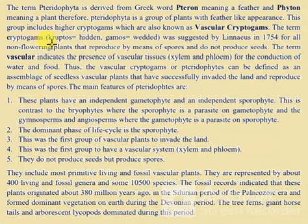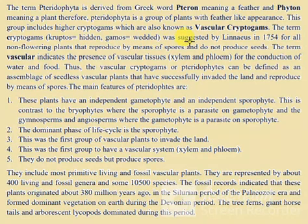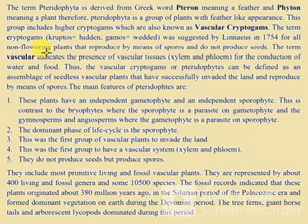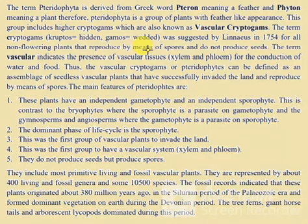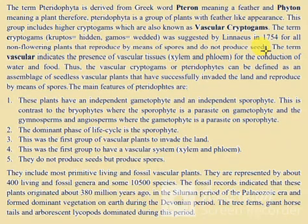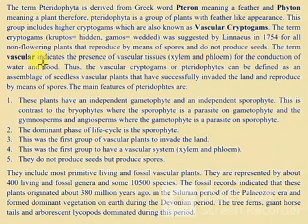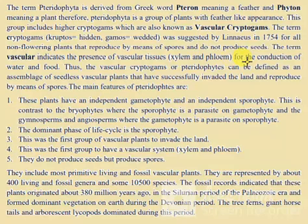This group includes higher cryptogames, which are also known as vascular cryptogames. The term 'cryptogames' — from 'cryptos' meaning hidden and 'gamos' meaning wedded — was suggested by Linnaeus in 1754 for all non-flowering plants that reproduce by means of spores and do not produce seeds.